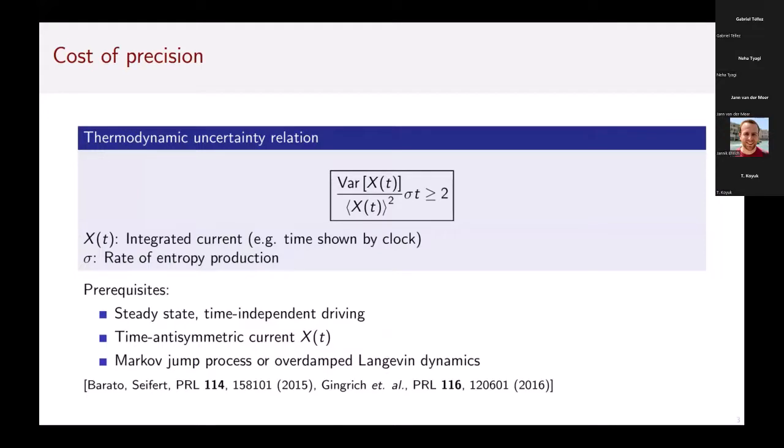Given that, one could believe that there is a minimal energetic cost for operating a precise clock. This is the motivation to formulate the thermodynamic uncertainty relation. In the example of a clock, your x(t) would be some integrated current that is the time shown by the clock, and we have the rate of entropy production. It has only very few prerequisites to derive that equation: you need a steady state, time independent driving, and a time asymmetric current.